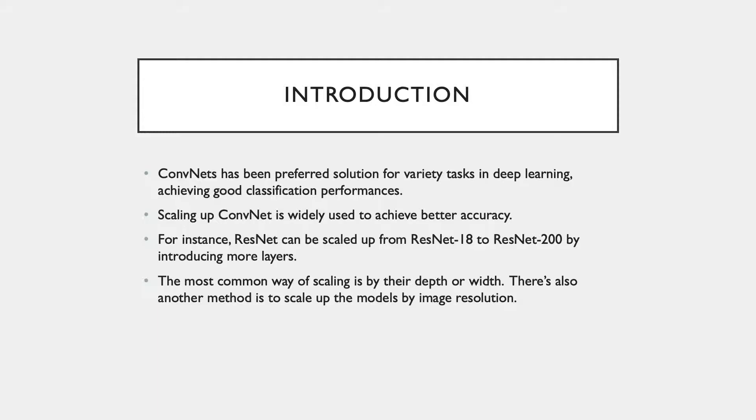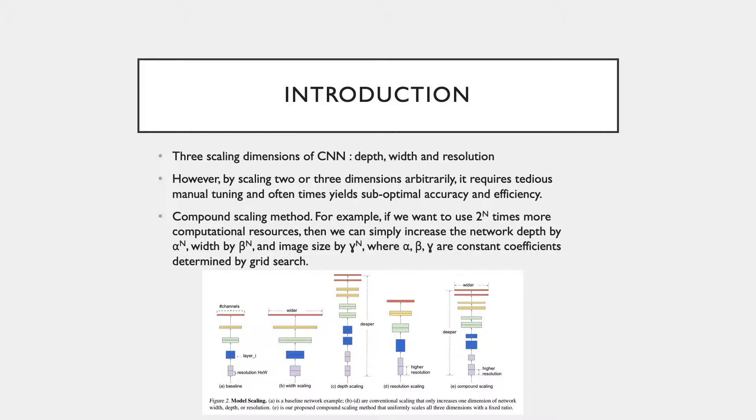For example, scaling up the ResNet model from ResNet-18 to ResNet-200 by extending the network depth or layers. The most common way is to scale up the convolutional network by their depth or width. Another less common way is to scale up models by image resolution.